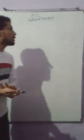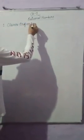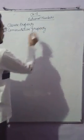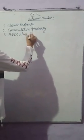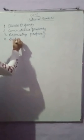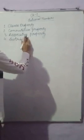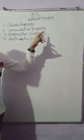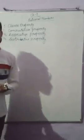There are four types of properties which can be applied to rational numbers. First one is closure property, second one is commutative property, third one is associative property, and fourth one is distributive property.